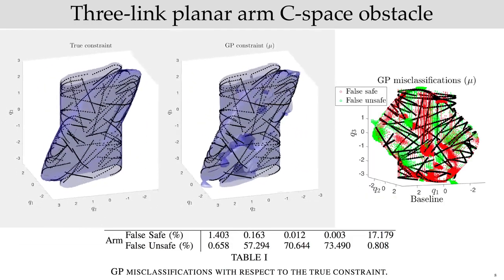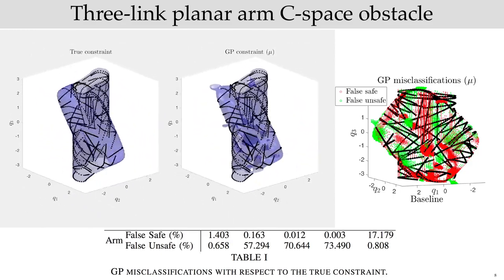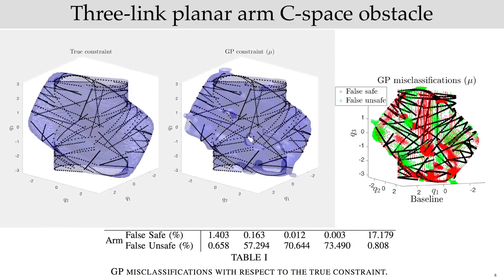As shown in the middle, our GP recovers a constraint which is highly faithful to the ground truth obstacle, shown on the left, achieving minimal misclassification errors, as shown on the right.